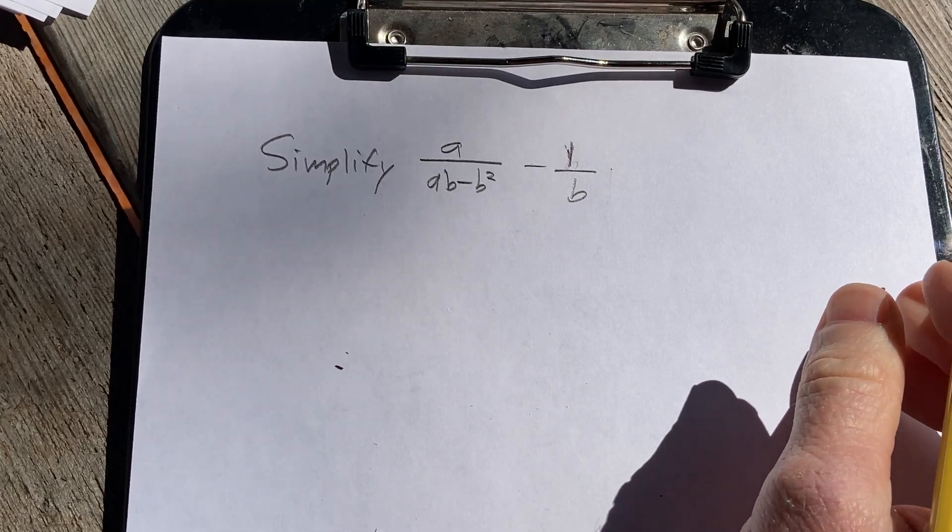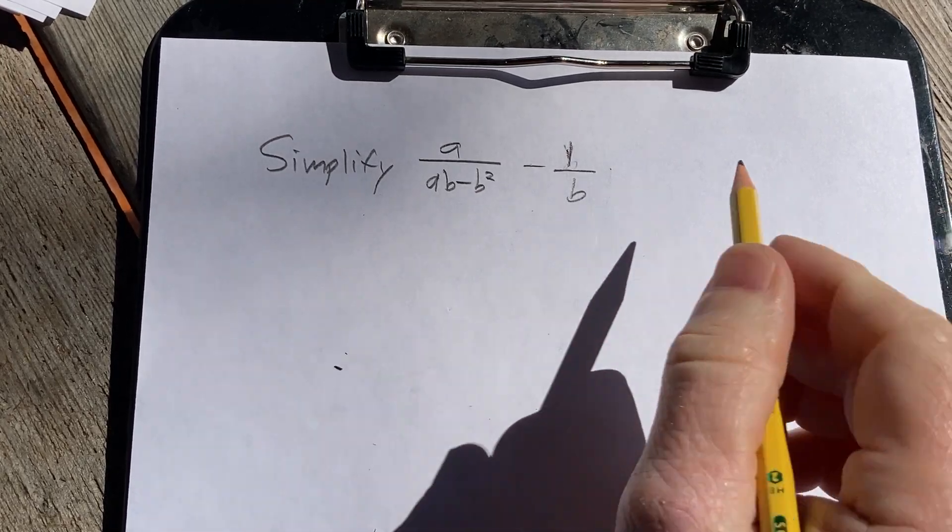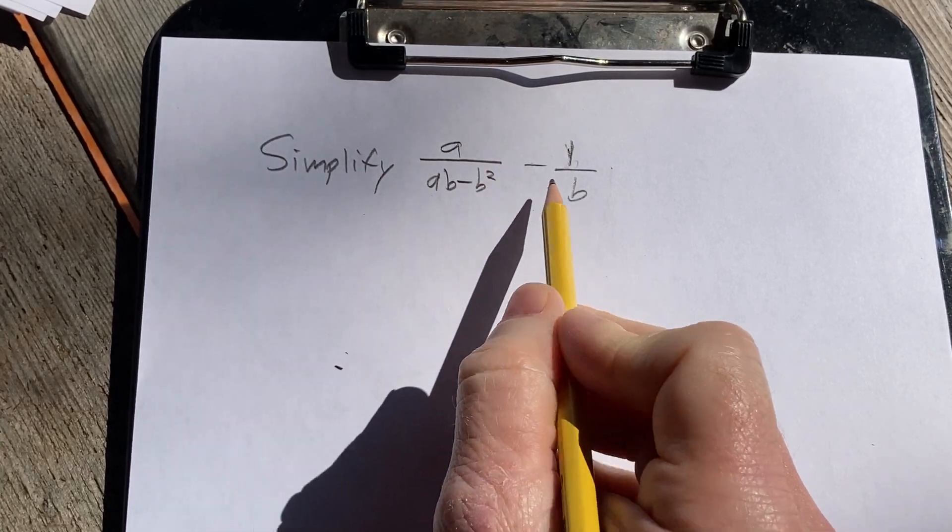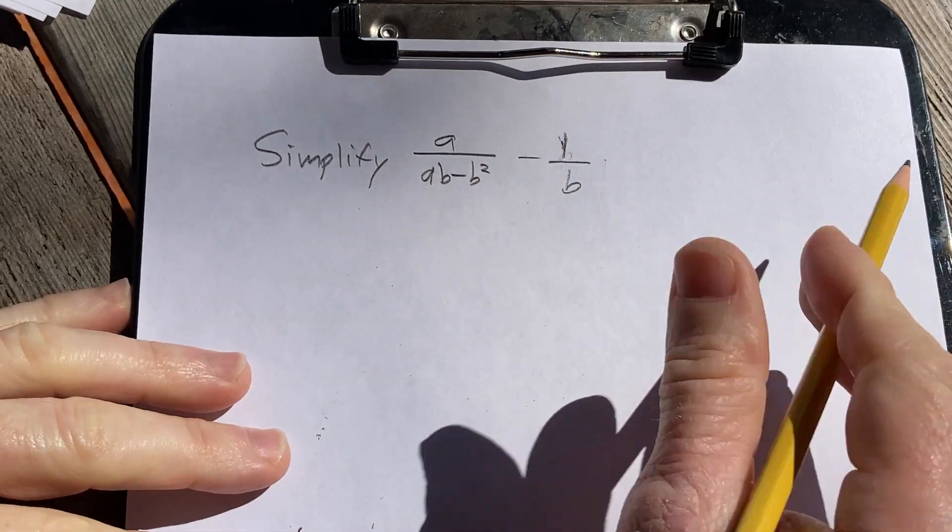Hi, in this video we're going to do a simple simplification problem. We have to simplify a over ab minus b squared minus 1 over b. Let's go ahead and go through it carefully.